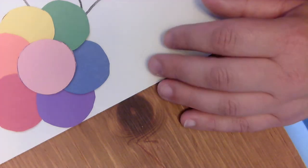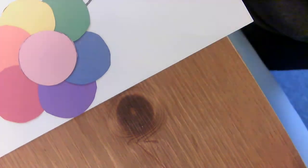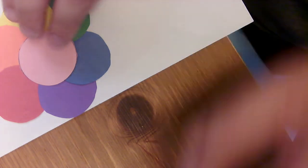Once you decide what you want your flower to look like, that's when the fun starts. We start gluing it down onto our white sheet of paper.